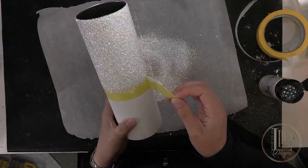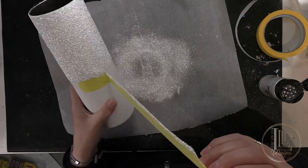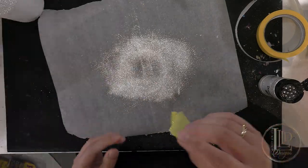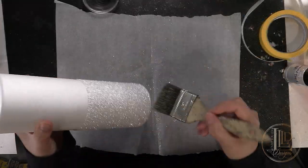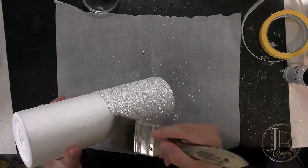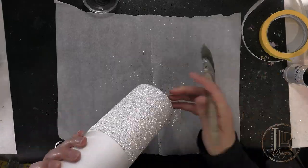With the glue still wet, I will remove the tape so I get a nice clean glitter line. Just like before, I will set my tumbler to the side to fully dry. Since the glue applies thicker on a second coat, I'm going to wait at least an hour before I brush off the loose glitter and apply a brush-on sealer to seal my glitter.